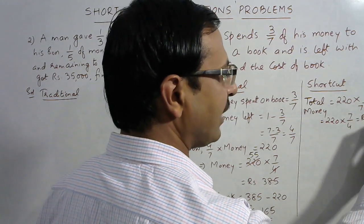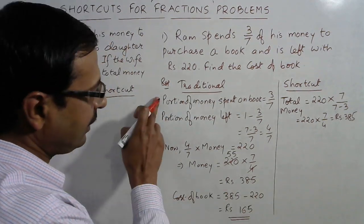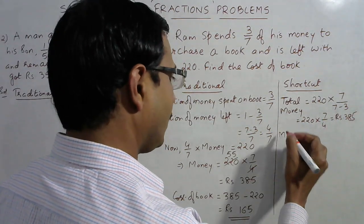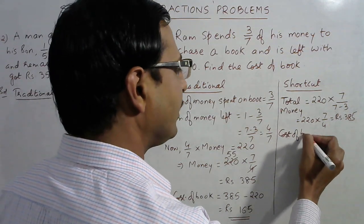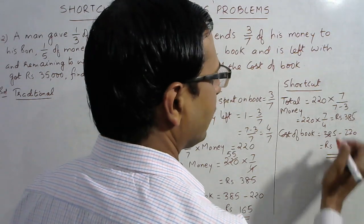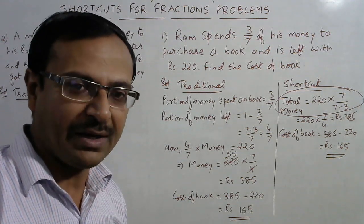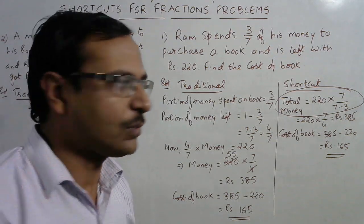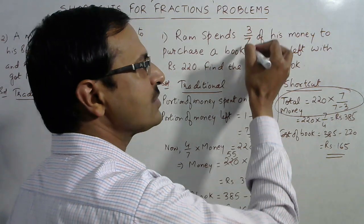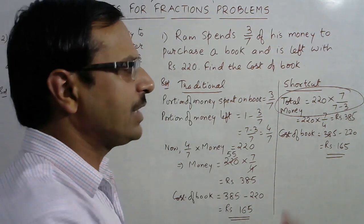This gives ₹385 directly. We already found the total money here in one step, whereas the traditional method took four to five steps. The cost of the book is then found orally: 385 − 220 = ₹165. The key shortcut: however much amount is left, multiply by the reciprocal of the fraction spent, and place the difference of numerator and denominator in the denominator. That gives the total money directly.